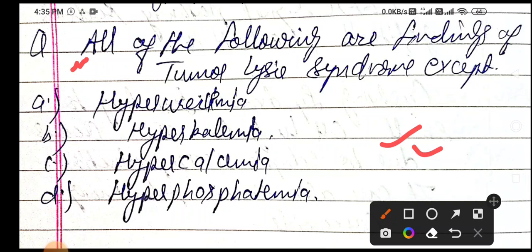...hyperphosphatemia, except hypercalcemia. Because in tumor lysis syndrome we see hypocalcemia, not hypercalcemia. So the answer is C. If you like this video, put a like on it. If somebody is new on my channel, please subscribe. Thank you.